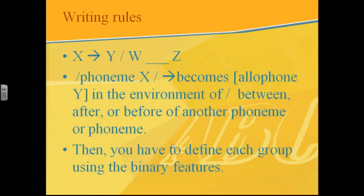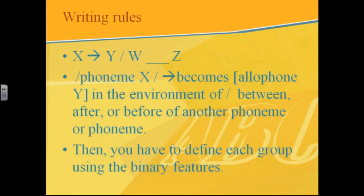When you write phonological rules, you have to come back to binary features and define each group. For the X, use binary features starting with major class features — sonorant, consonantal, approximant — then go with minor features like continuant, strident, nasal, lateral. The environment also needs to be defined by the sound causing the phonological process. Everything must be written in big square brackets.